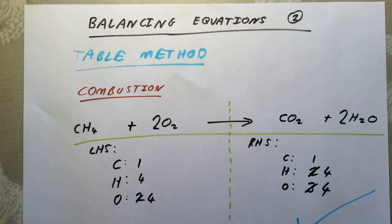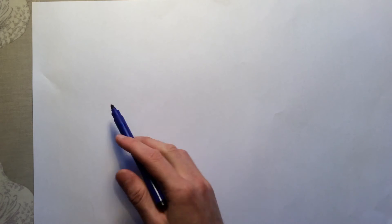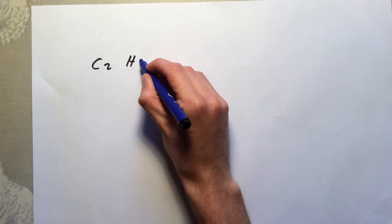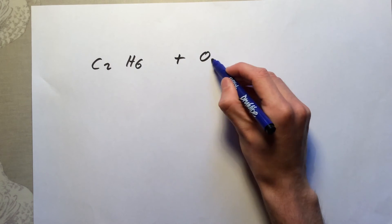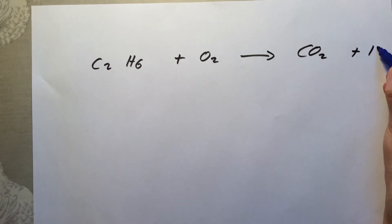The second example I am going to go through is quite a lot trickier. This one is going to be the reaction for the combustion of ethane. Now methane was CH4, but ethane is C2H6. There will be a video later on about how we work out the formulae of these. As it is a hydrocarbon, it will react with oxygen again, and it is going to form carbon dioxide and water.